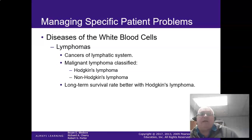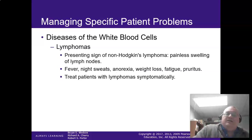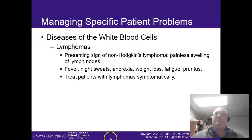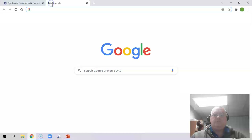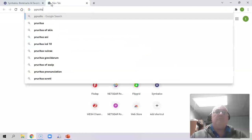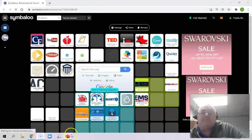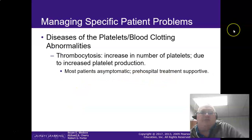Lymphomas: the malignant lymphomas include Hodgkin's disease and non-Hodgkin's. Long-term survival rate is better now for Hodgkin's lymphoma. These are cancers of the lymphatic system occurring in the lymph glands. Signs and symptoms include fevers, night sweats, weight loss, fatigue, and pruritis — itchy skin. Treat them symptomatically: make sure they're not dehydrated from the fever and night sweats.